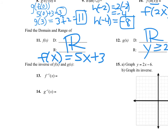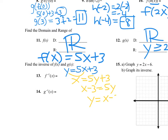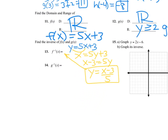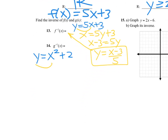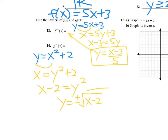We're going to find the inverse of f of x and g of x. For f of x, change it to y, then switch x and y. Subtract 3 to the other side, then divide everything by 5 — that gives you f inverse. For the inverse of g, take y equals x squared plus 2, switch x and y to get x equals y squared plus 2, then solve for y. Subtract 2, then square root both sides. Since it's an equation, you need plus and minus — that would be g inverse.